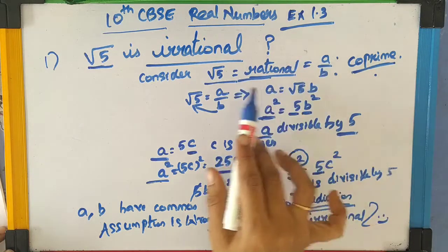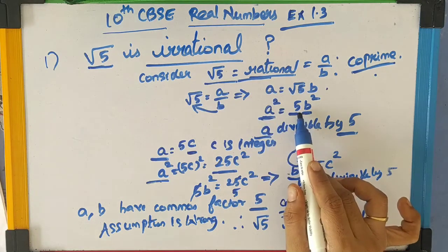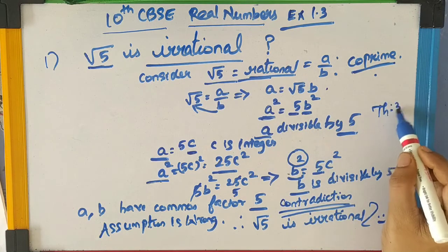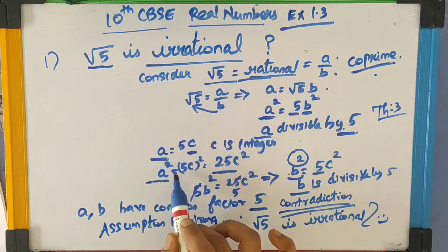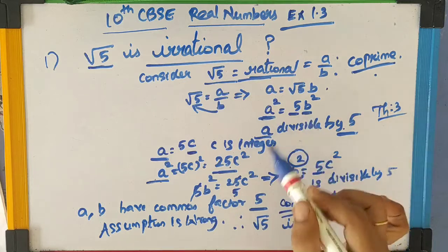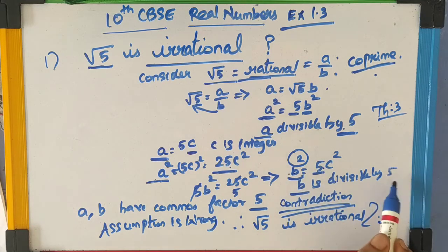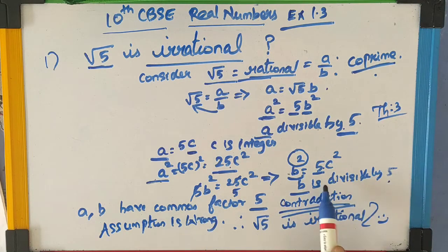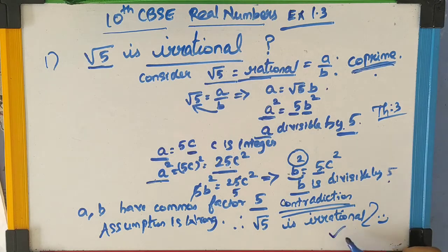Let me explain the procedure again. We considered square root of 5 as rational, equal to A by B. So A squared equals 5B squared. If A squared is divisible by 5, then A is also divisible by 5 — using Theorem 3. Since A is divisible by 5, we write A equals 5C where C is an integer. So A squared equals 25C squared. Comparing 5B squared and 25C squared, we get B squared equals 5C squared. Applying Theorem 3 again, B is also divisible by 5. So A and B have a common factor 5, but A and B are co-primes — contradiction. Therefore, square root of 5 is irrational.